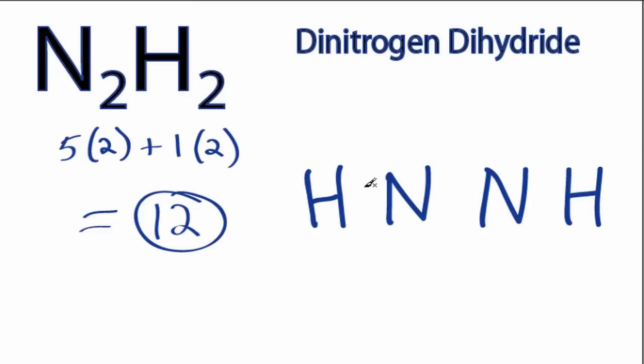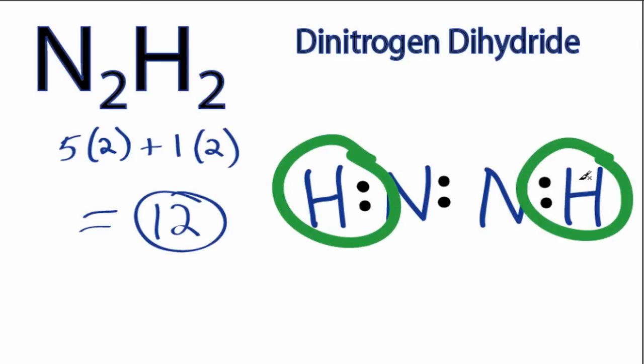We'll put a pair between the nitrogen and the hydrogen to form a chemical bond, over here, and then in the center. So we've used 2, 4, 6, and hydrogens only need 2 valence electrons for a full outer shell. We've filled the outer shell of both hydrogens, so we won't put any more there.